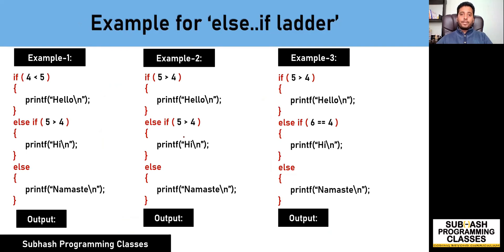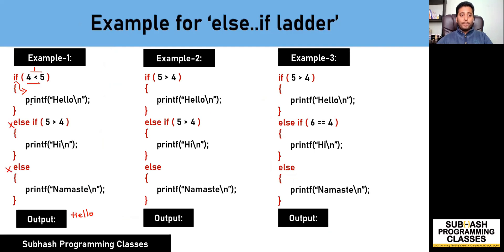Let us work on a few more examples — this time for the else-if ladder. In the first example, is 4 less than 5? That condition is true, resulting in a value of one. The program control enters the if block, executes the statements, prints 'hello', and ignores the rest of the blocks. So the output is 'hello'.